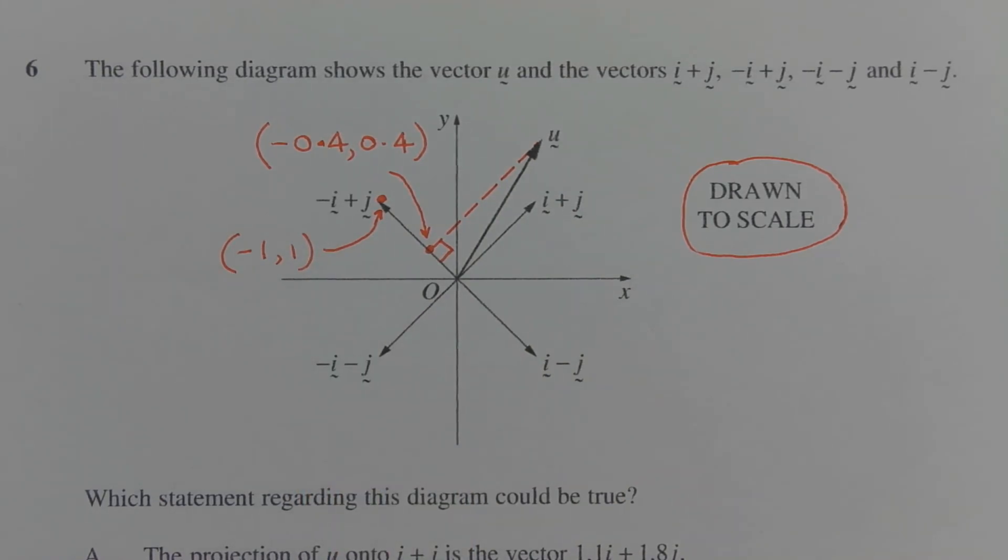So using methods in coordinate geometry, if I draw a right angle or a perpendicular to the vector negative i plus j, that's the dashed line here.